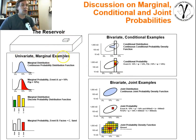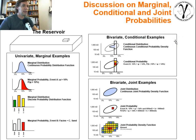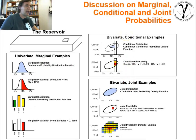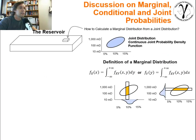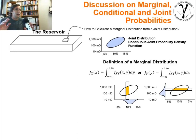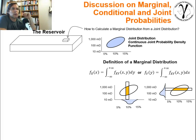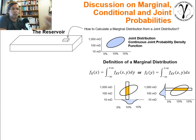So we've now covered for this unknown location: univariate marginal examples, bivariate joint examples, and bivariate conditional examples — how to calculate marginal, joint, and conditional distributions and probabilities. Now let's look at some practical examples of how we move between these. How do we make calculations given this information? First: how do we calculate the marginal distribution if we know the joint distribution?